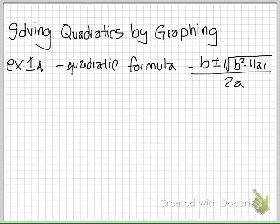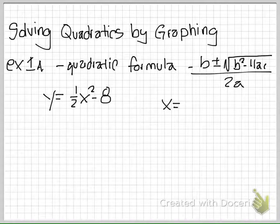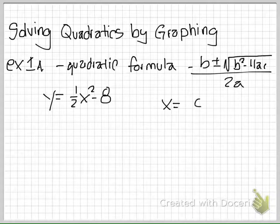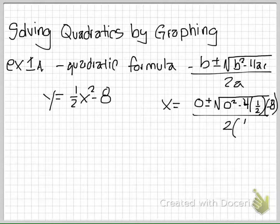In this example, I'm going to use this equation: y equals one-half x squared minus 8. When we use the quadratic formula, it gives us an x value. x equals negative b — in this case there isn't any — plus or minus the square root of b squared, again 0, minus 4 times a times c, which is negative 8, all over 2a.